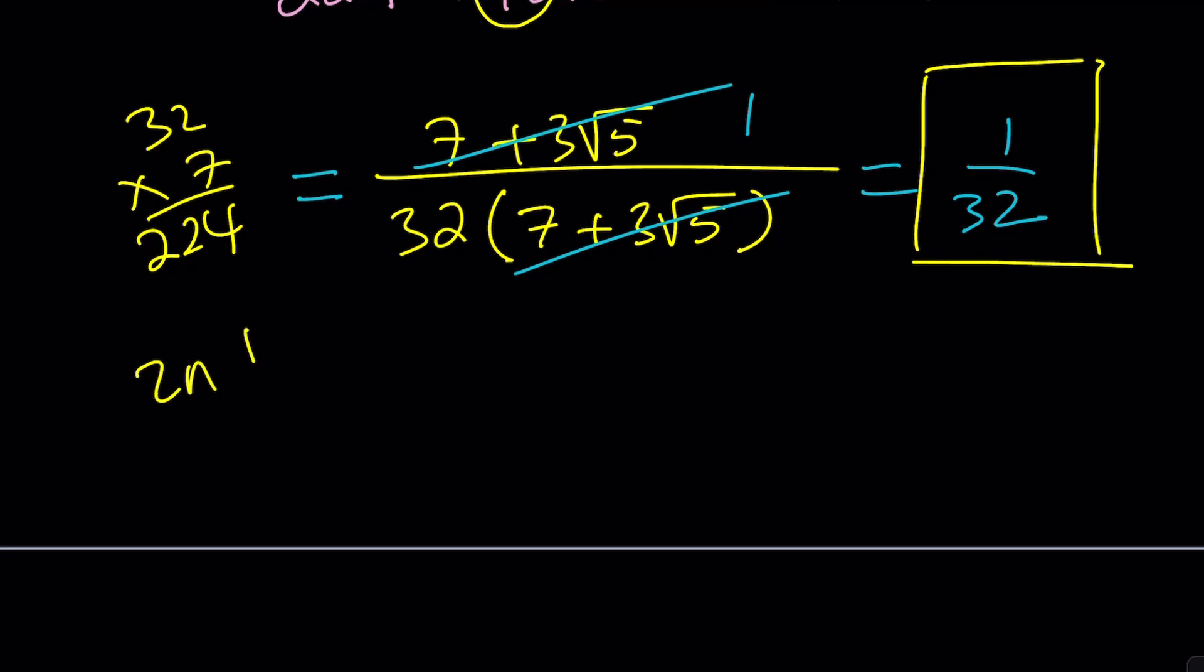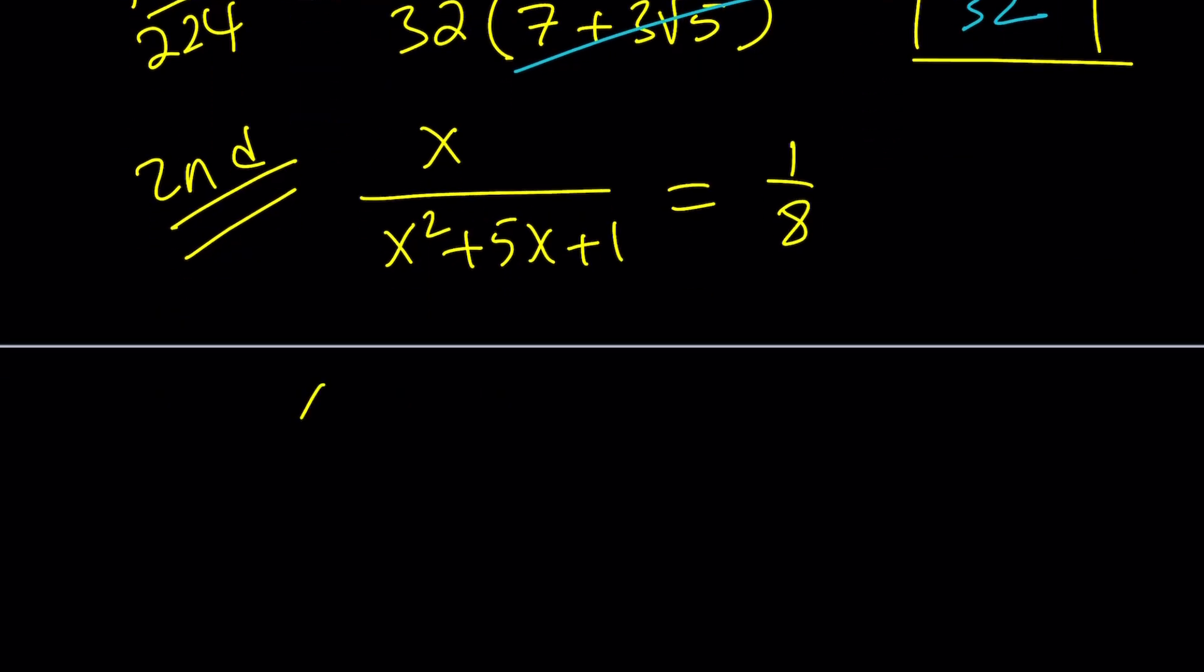So second method. Let me rewrite the problem. We are given x divided by x squared plus 5x plus 1 equals 1 over 8. And I think we've done a similar problem before. Let me see if I can find it. Or if you can find it, please link it down below. Thank you.